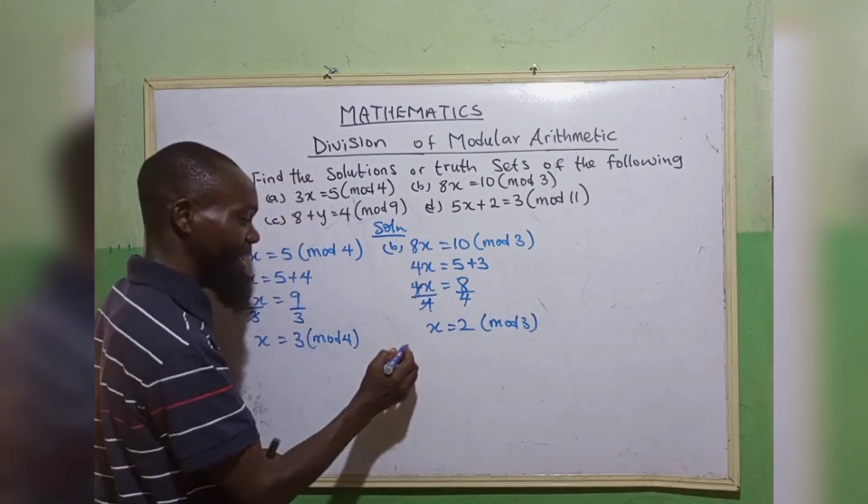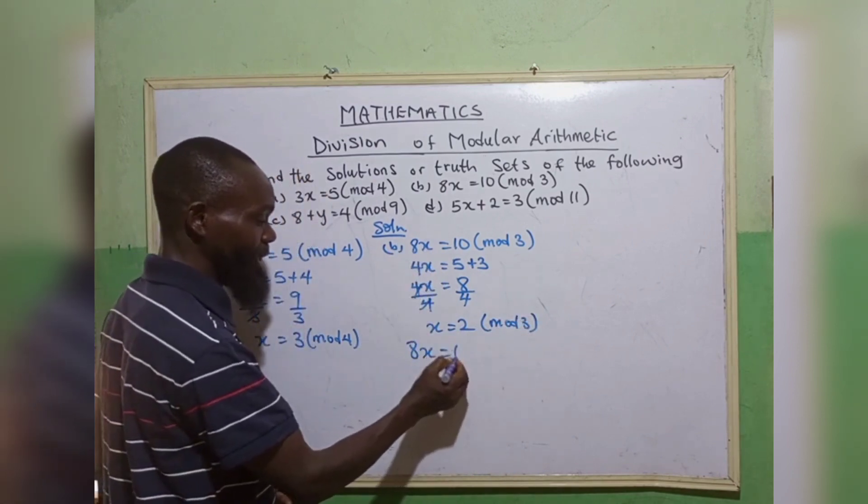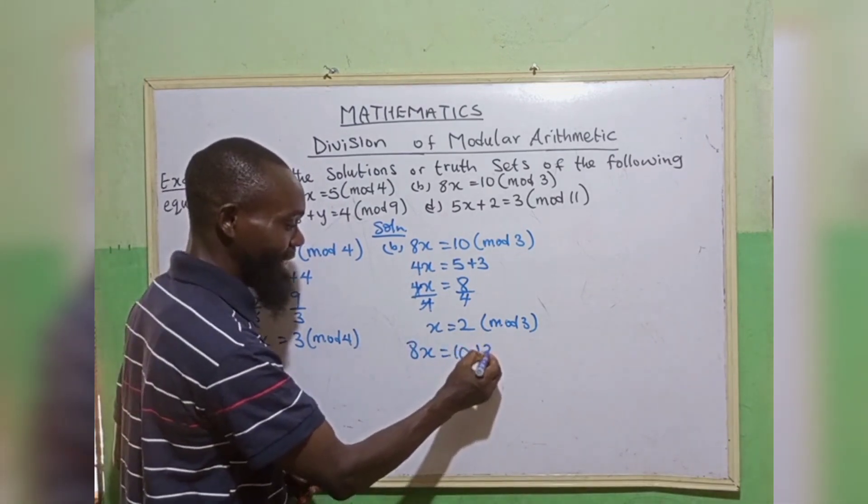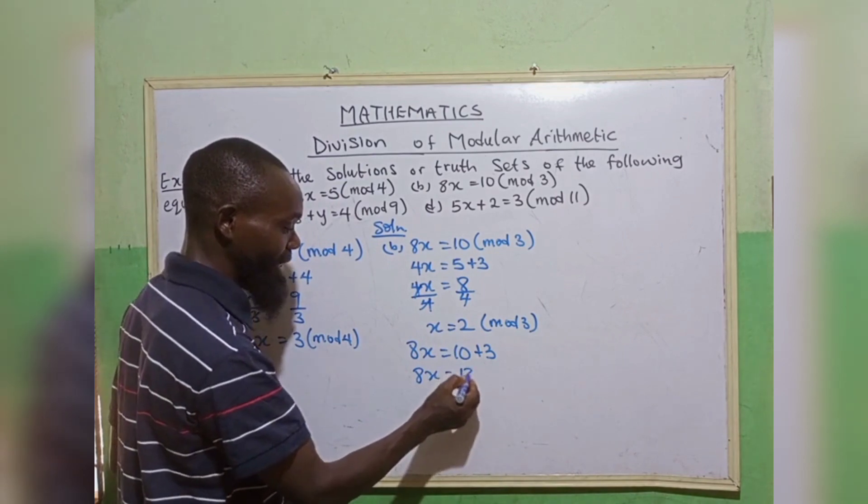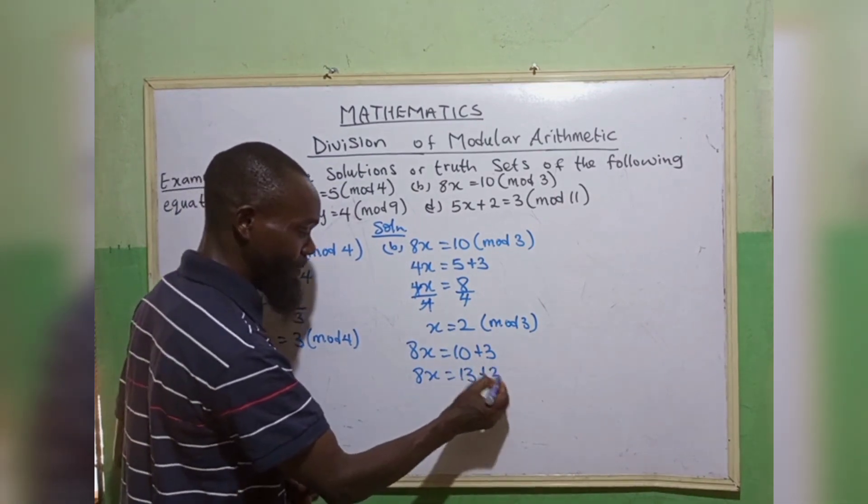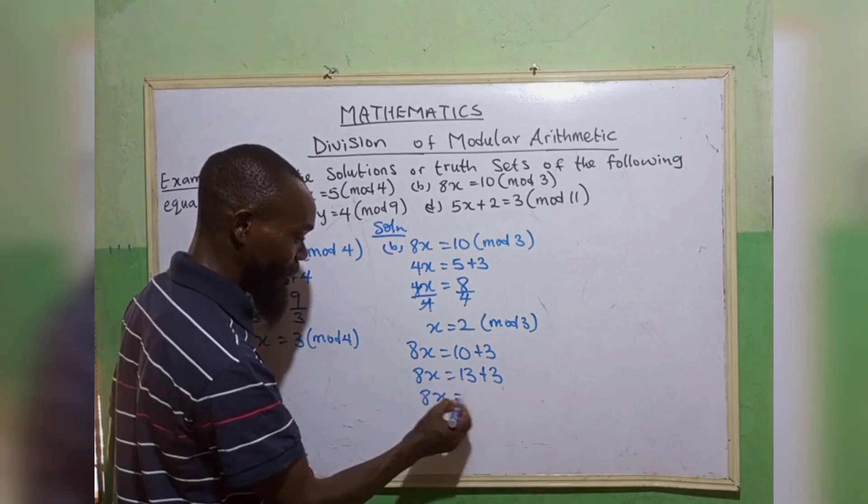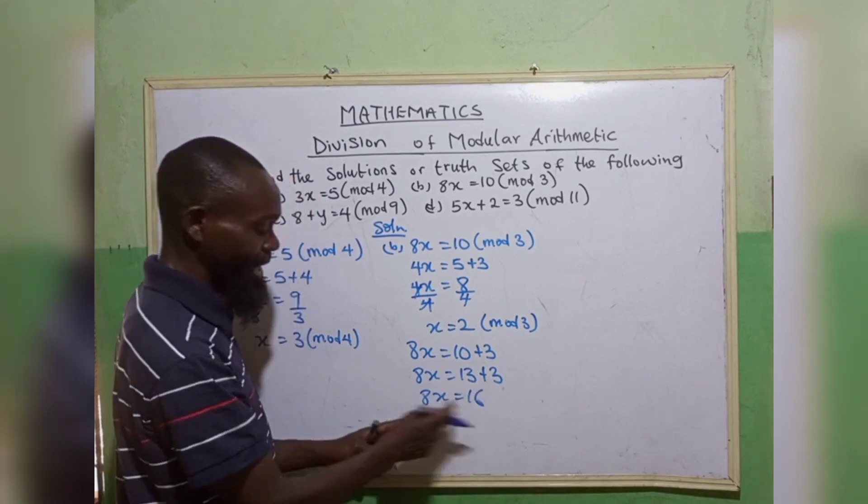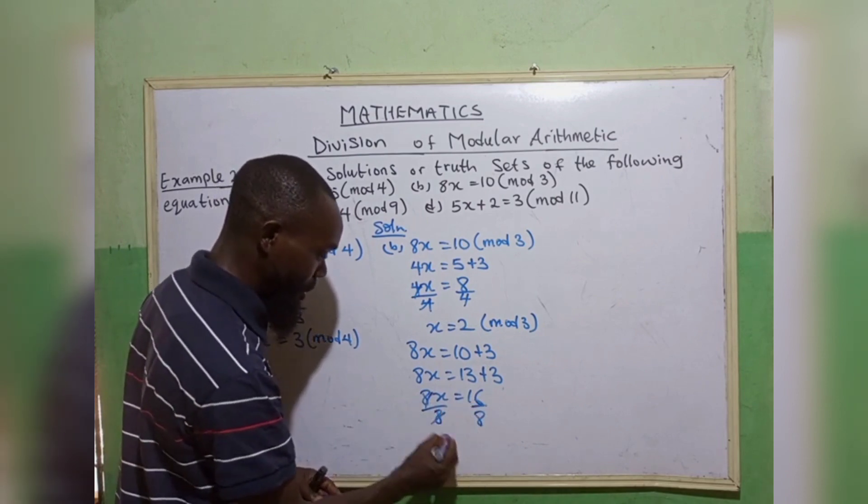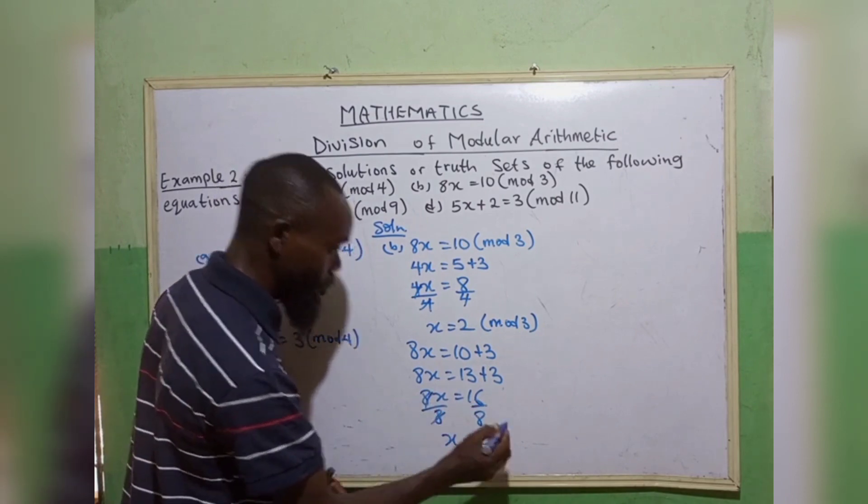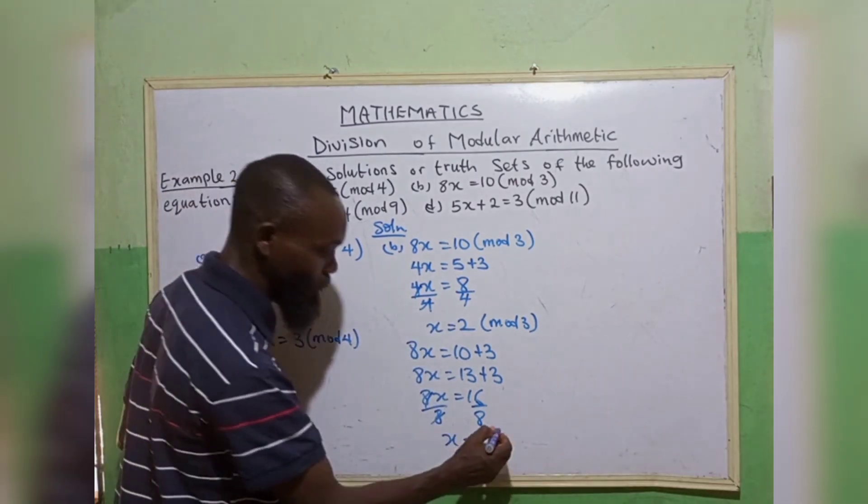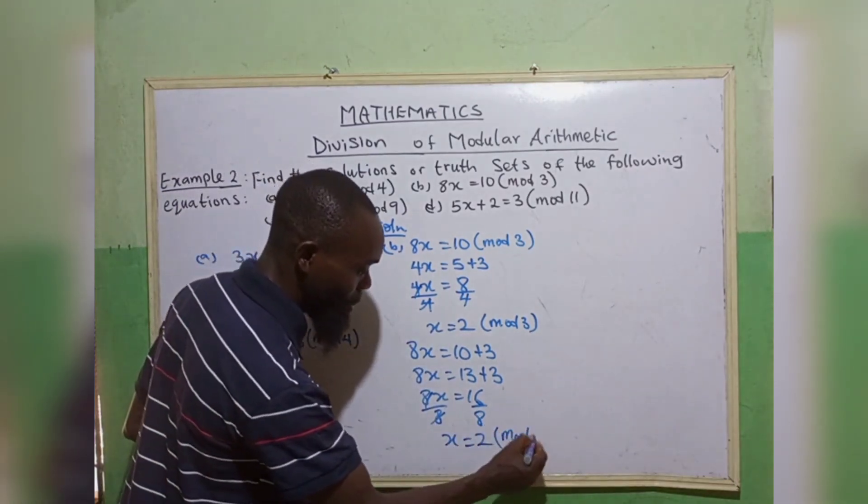Likewise, from 8x equals 10, what if I add 3 directly? We have 8x is equal to 13. 8 cannot go in 13. Let me add another 3. 8x is equal to 16. So x can go in 16. So x equals to 2. You can see we have the same values. The value of x equals to 2 in mode 3.